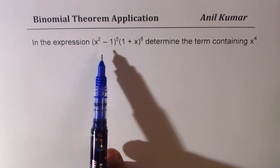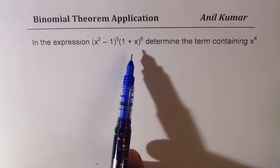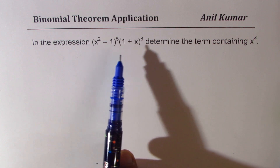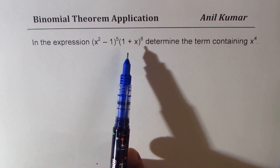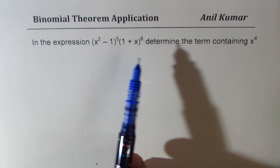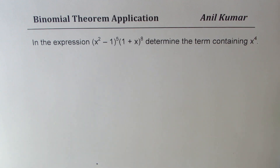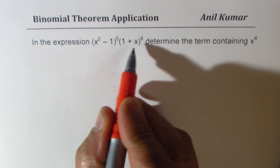Here we have a product of two terms. To find a general term, we have to find the general term for each, multiply them, and then find the general term having x to the power of 4. In an expression, we could have many terms which could be combined, as we will see in this video. The first step is to find the general term for each one of them.